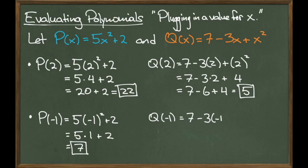In our last example, we'll compute Q of negative 1. Here we get 7 minus 3 times negative 1 plus negative 1 squared, which simplifies to 11.